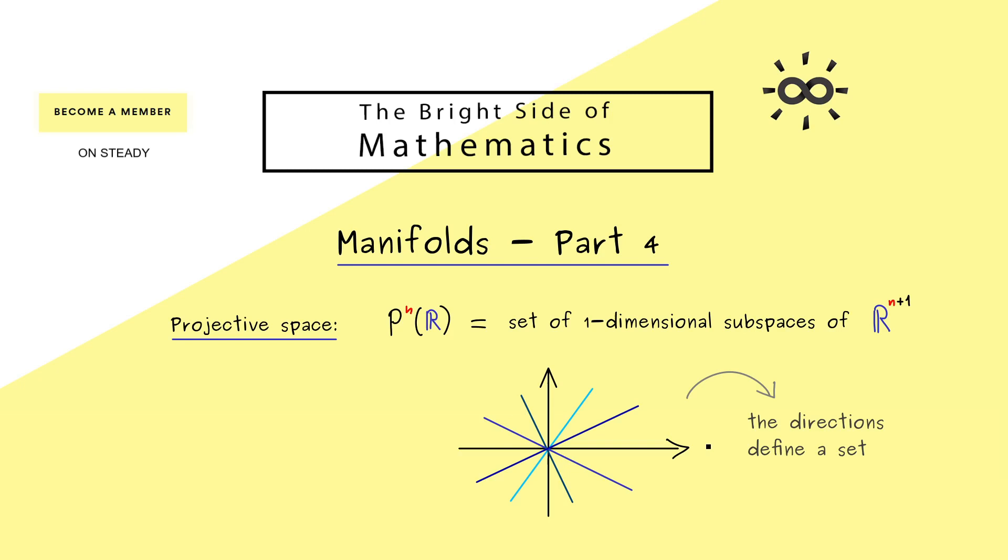Therefore, each direction we have here gives us an element in P^n(R). Now I show you soon how we formally do this, but you should see we don't have any problems defining this set. However, of course you know we also want a topology on this set.